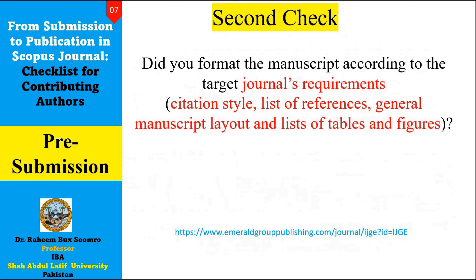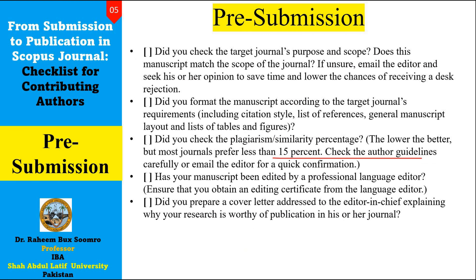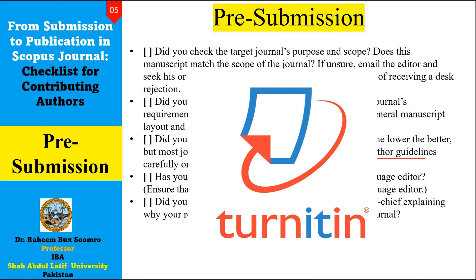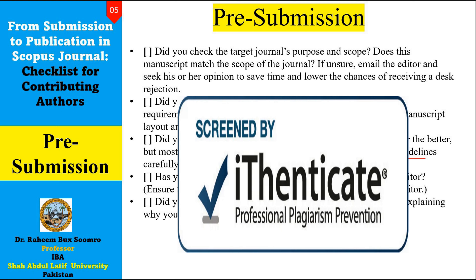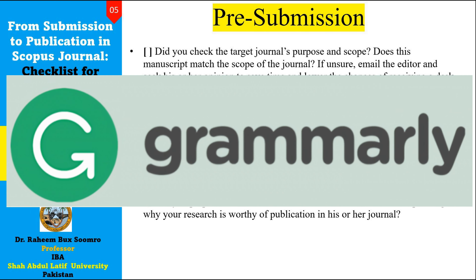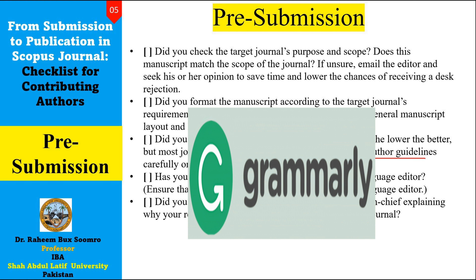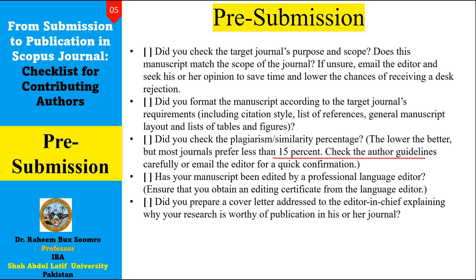The last check is about the similarity index. Different software tools are available — a very popular one is Turnitin. You can upload your document to Turnitin and check the similarity index. The ratio should be less than 19 percent; ideally, it should be at least less than 15 percent. The lower the similarity index, the better. Other software options include PaperRater, and even Grammarly provides a plagiarism check.